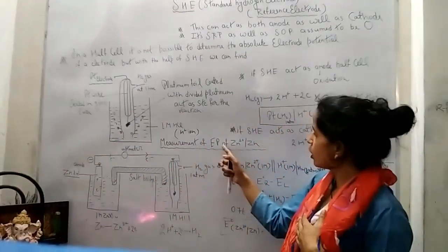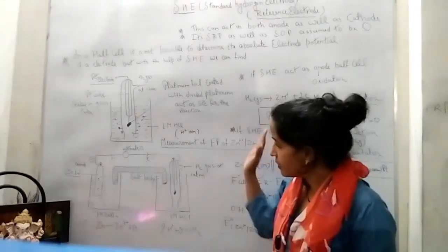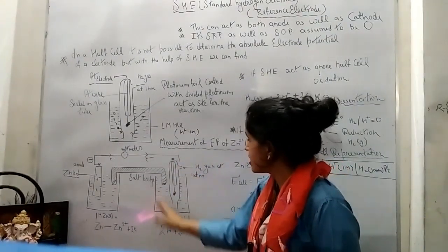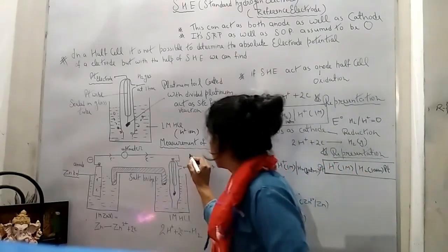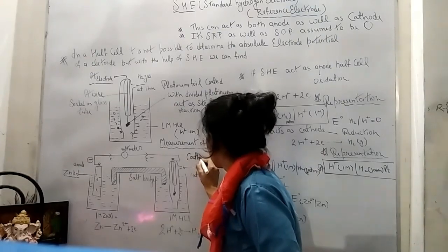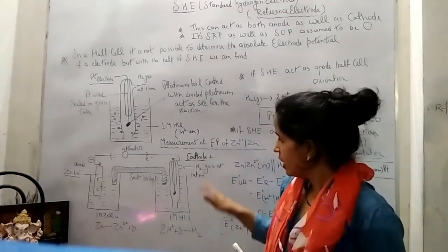Here I have written one example: measurement of electrode potential of Zn²⁺/Zn. See that here SHE acts as a cathode, represented by positive. This is cathode.